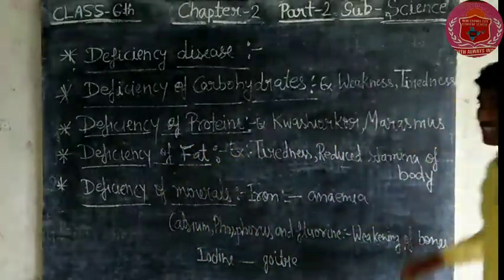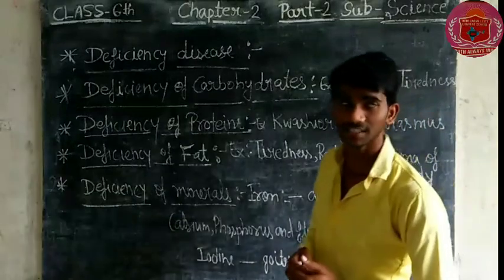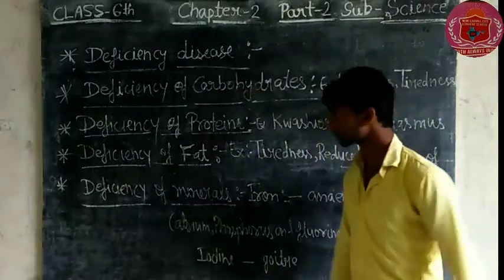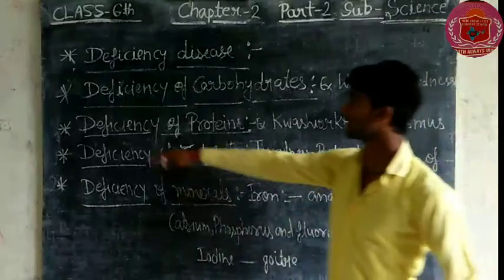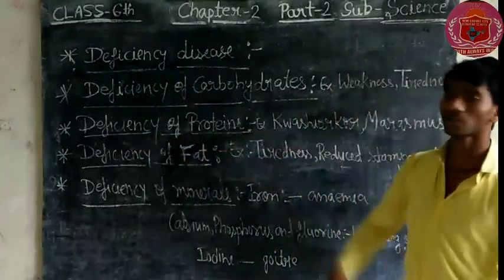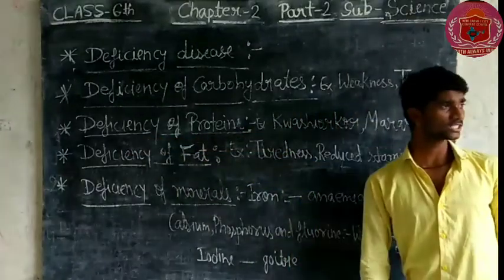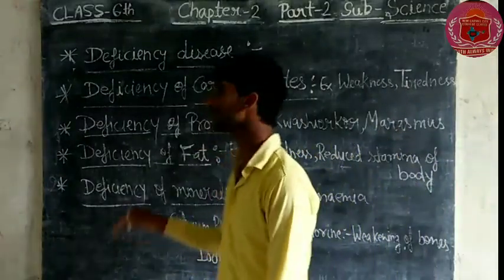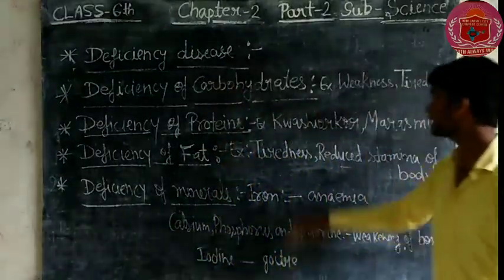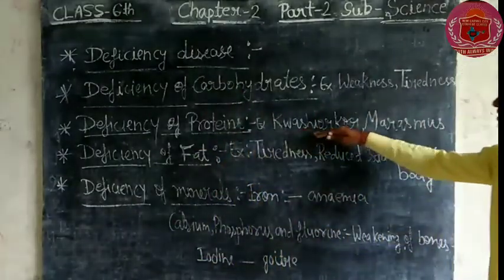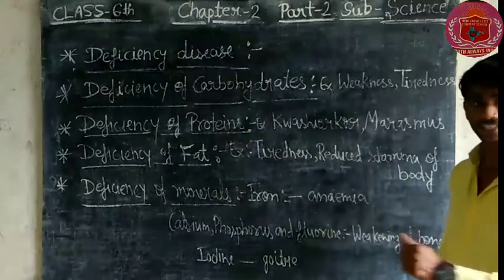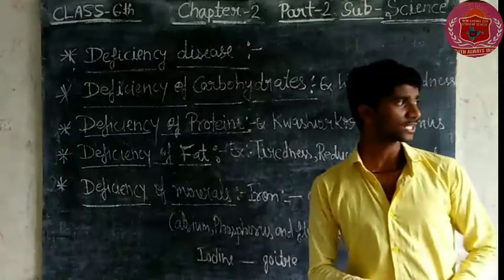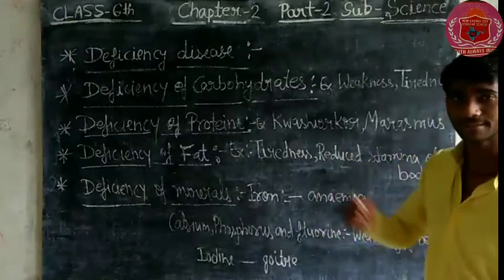Second is the deficiency of proteins. When protein is low, diseases are caused. One such disease is Kwashiorkor, which affects poor children who are less than 10 years of age.